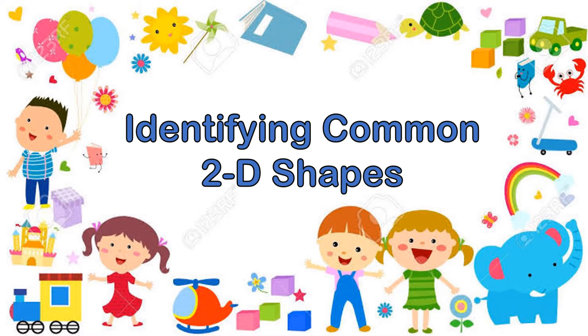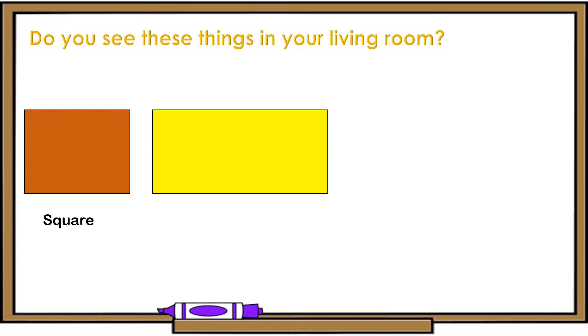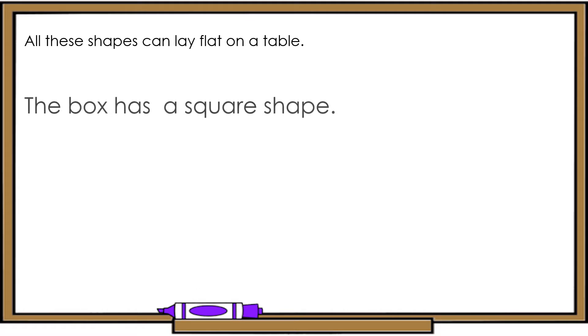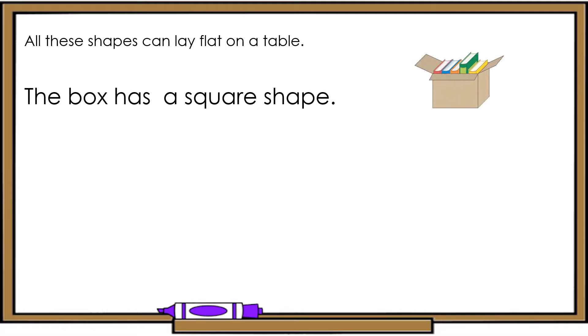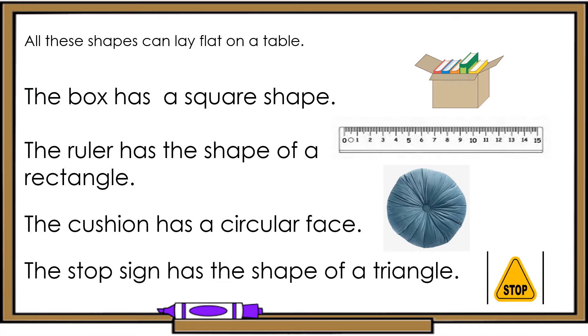Identifying common 2D shapes. So, do you see these things in your living room? What shape is this? This is a square. How about this? This is a rectangle. How about this shape? This is a circle. And this? This is a triangle. All these shapes can lay flat on a table. The box has a square shape. The ruler has the shape of a rectangle. The cushion has a circular face. This top sign has the shape of a triangle.